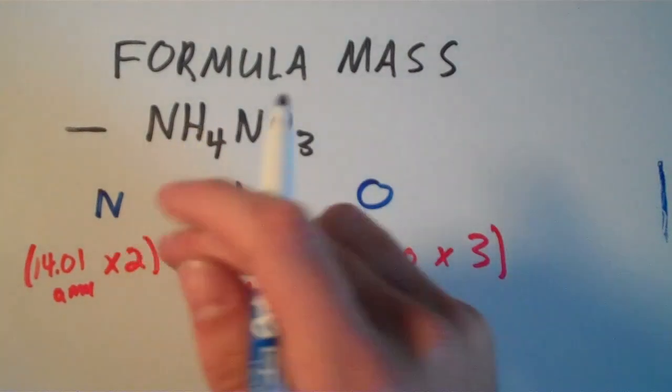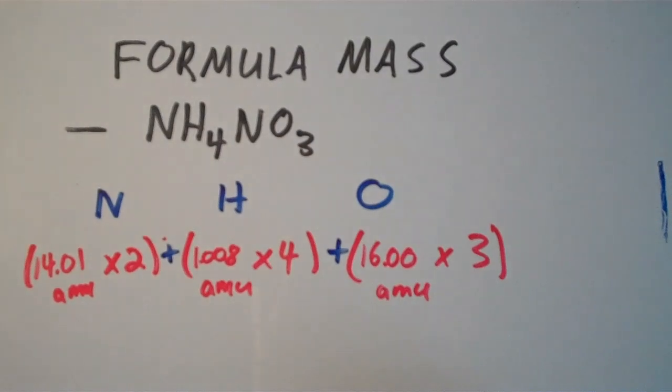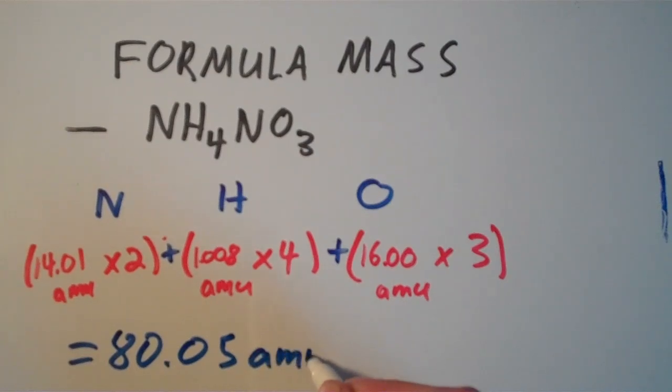So what we're going to do is just add these three quantities together. And that will give us 80.05 AMU. So this is the formula mass for ammonium nitrate, 80.05 AMU.